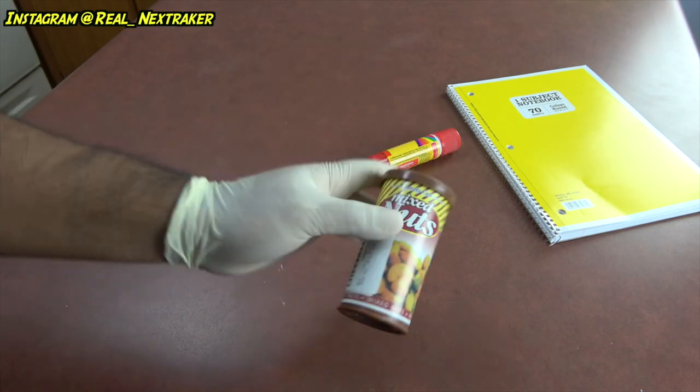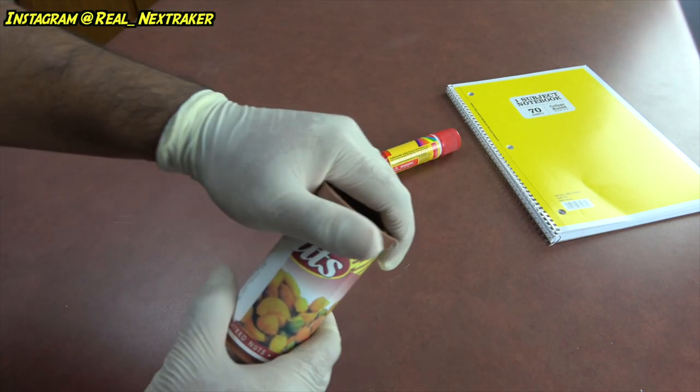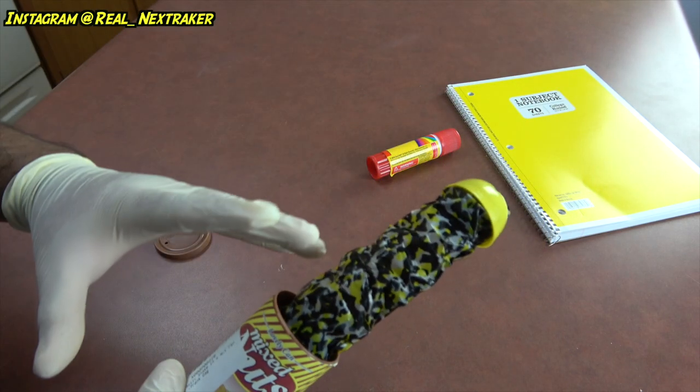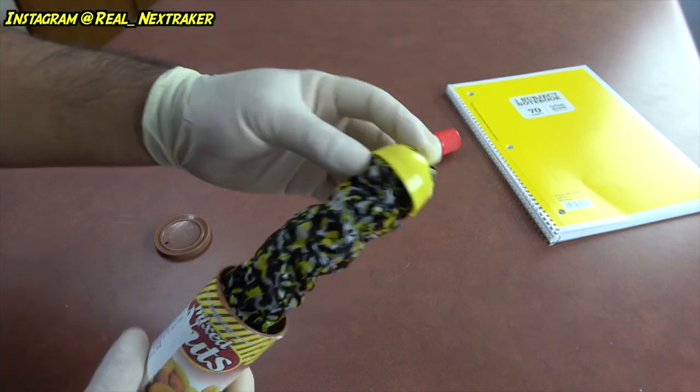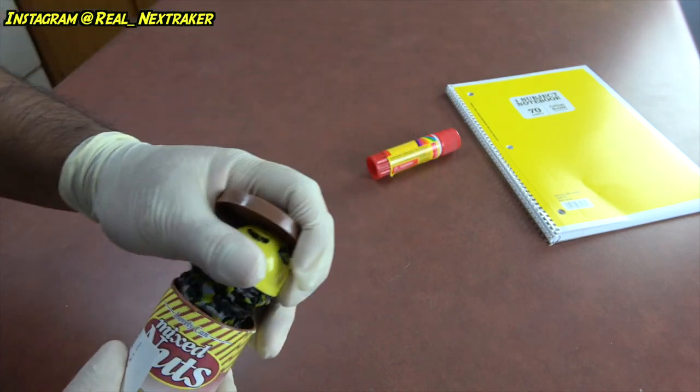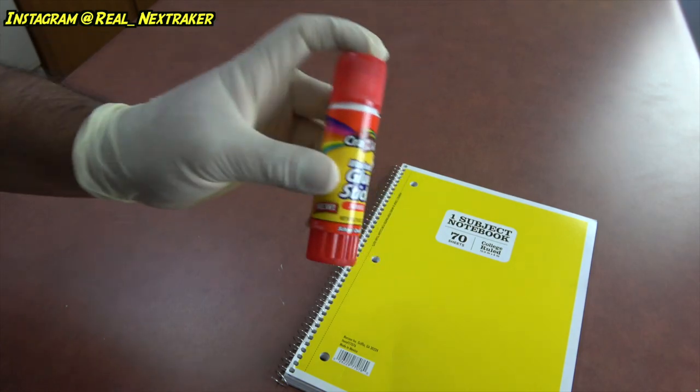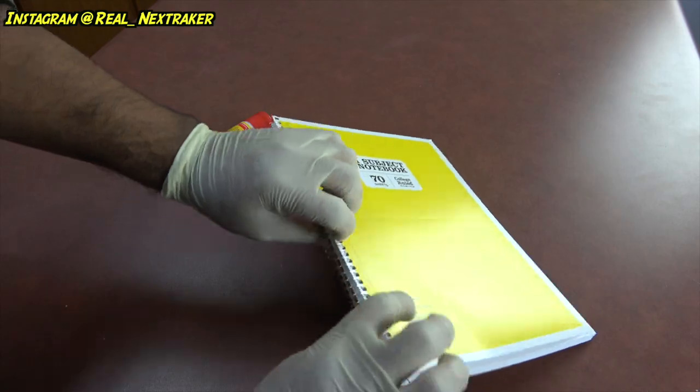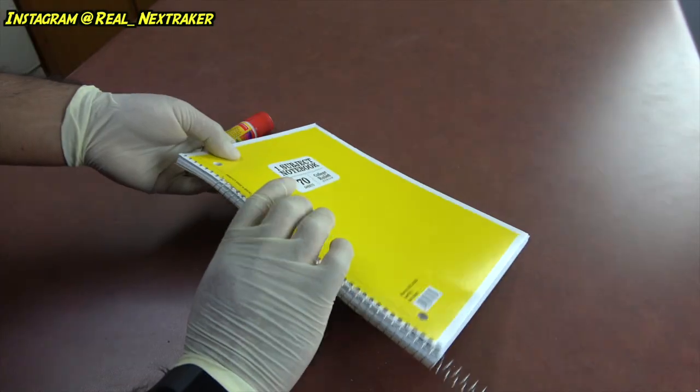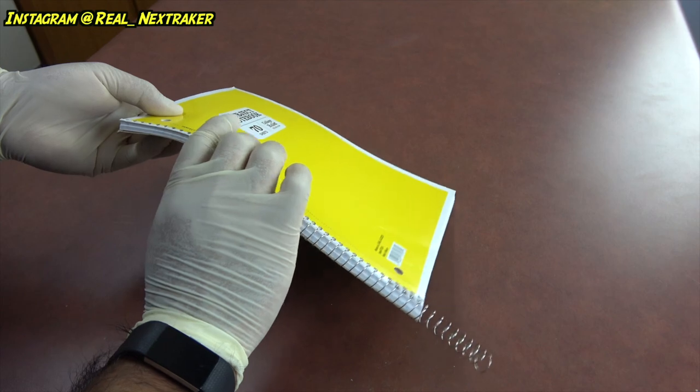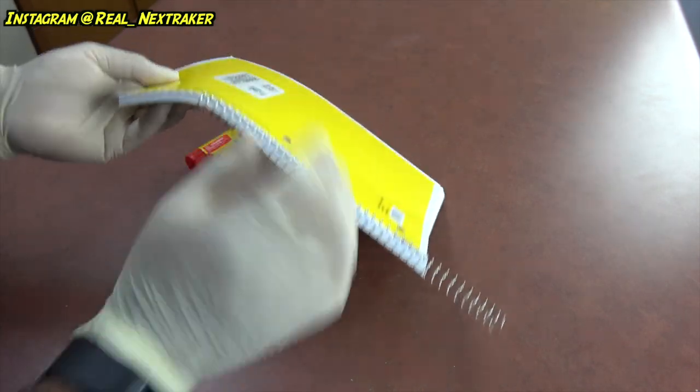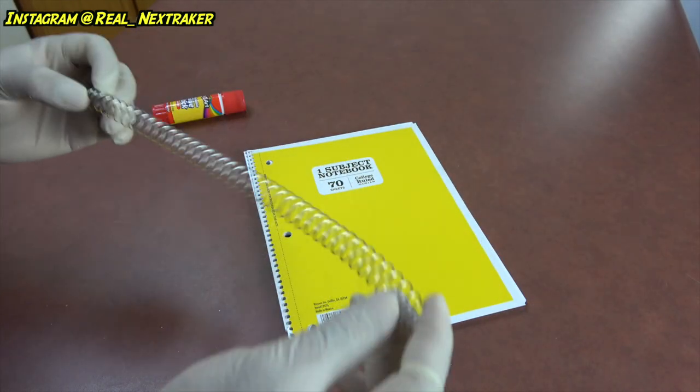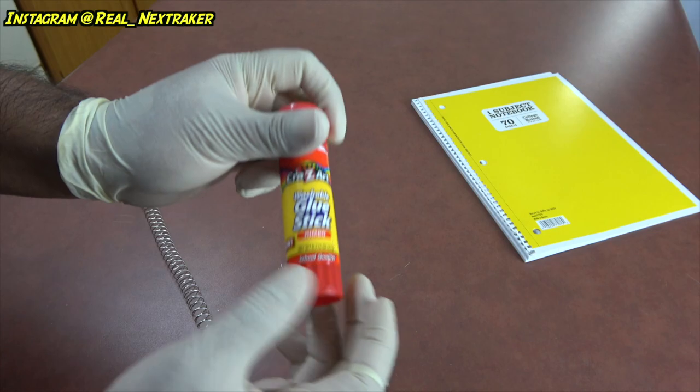The last toy we are gonna make is gonna be a gag toy. Something similar to this snake in a can of peanuts prank toy. This one in particular does pop up, but doesn't pop out entirely. So we are gonna be making something like this. For this toy, we're gonna need a spiral notebook like this one and a glue stick. We can begin by removing the spiral from the notebook and it's quite easy. Just undo the ends and twist it off. This is not hard at all. Once you have it removed, set it aside and begin working on the glue stick.